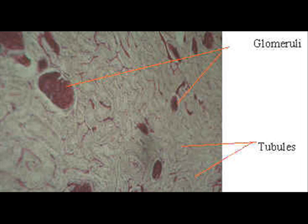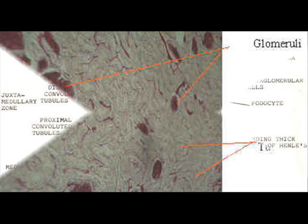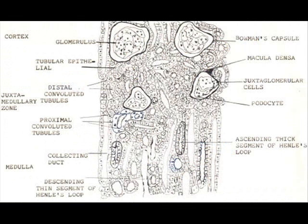The medulla contains mainly tubules which extend into the cortex via medullary rays. The cortex on the other hand has numerous glomeruli and only a few renal tubules but considerable convoluted tubules. There are very many glomeruli in the medulla.